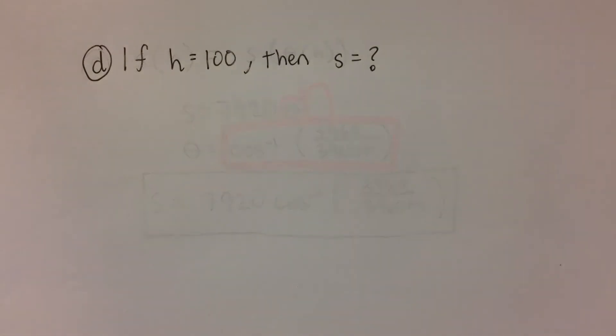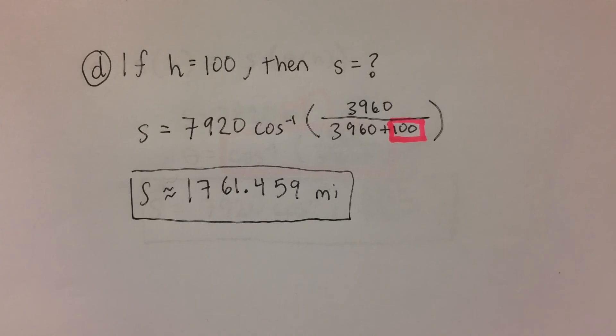In part d, we will assume that the satellite is 100 miles above the earth, so h is 100, and we are going to calculate the distance s that the satellite can see. To calculate this, we will substitute 100 into h into the equation that we wrote in part c. Using a calculator, we can find an estimate for how much the satellite can see, 1,761 miles.